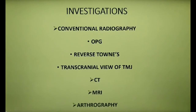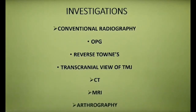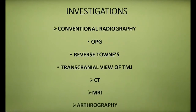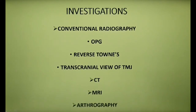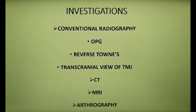Moving on to the investigations associated with condylar injuries. Recent advances in imaging technology have enabled accurate diagnosis and localization of condylar injuries. You may use conventional radiographic techniques like orthopantomogram, reverse Towne's view, or a transcranial view of the TMJ. You may also use computed tomography, MRI, or arthrography. MRI is usually performed to study soft tissues associated with the TMJ, and arthrography is mainly used to study the joint space.